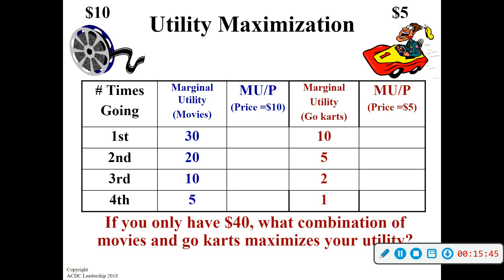This is called utility maximization — this is what you'll actually have to do on the test. It does come up in FRQs, in the free response portions of the test, every couple of years. The big idea is that you've got two activities and you have a set amount of money that you can spend — in this case $40. You're trying to decide between going to the movies for $10 or riding go-karts for $5. Your goal is to maximize utility for that $40 — where are you going to get the most happiness per dollar spent?